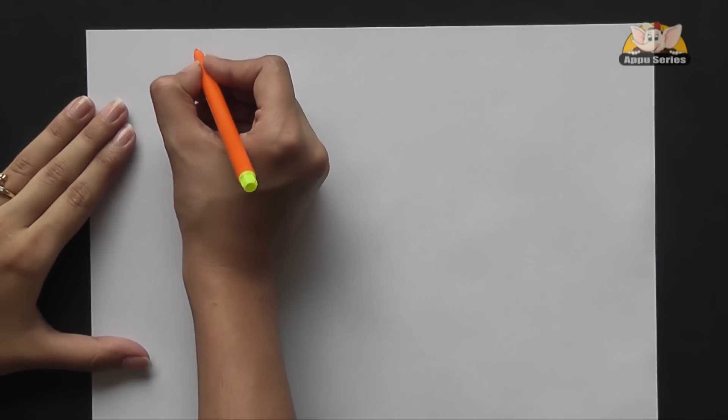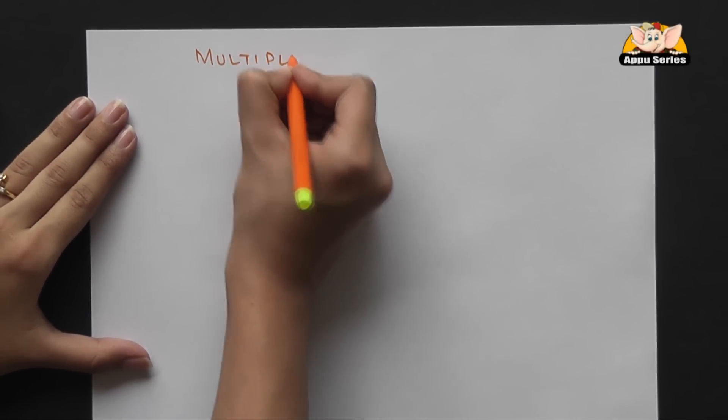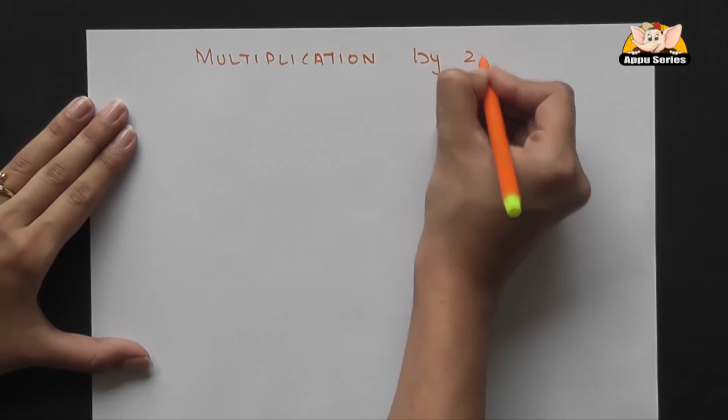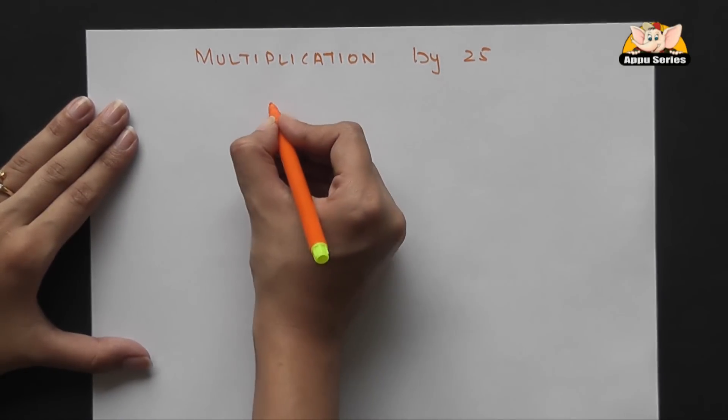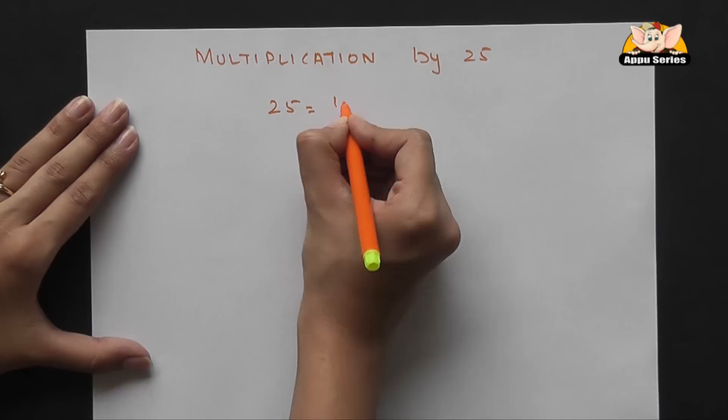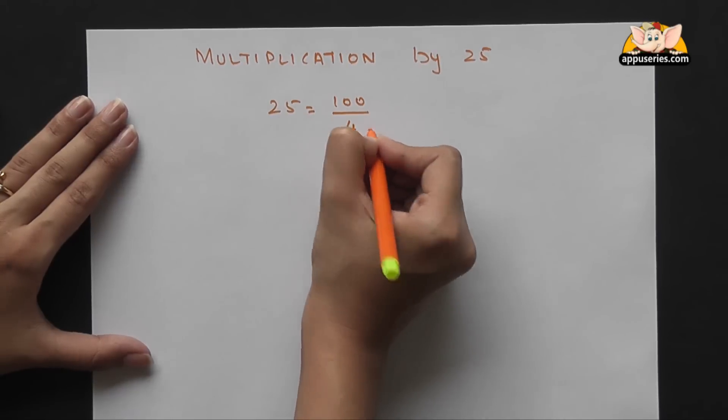Today I'm going to show you an easy method for multiplication by 25. Following our previous concept of multiplication by 5, here 25 is nothing but 100 by 4.